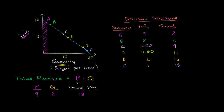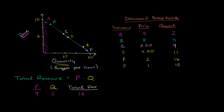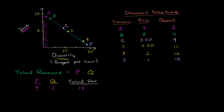Let's go to point B. At point B, when our price is 8 and our quantity is 4 burgers per hour, our total revenue is 8 times 4, which is $32 per hour. You can see that visually — the height of this rectangle is 8 and the width is 4, so total revenue is the area, height times width.